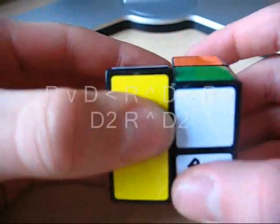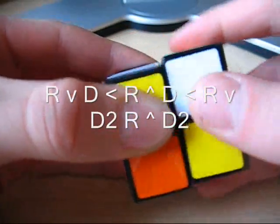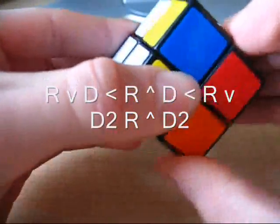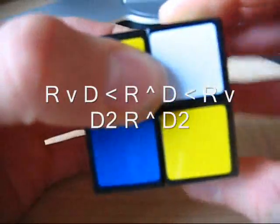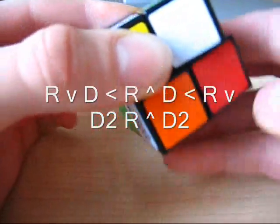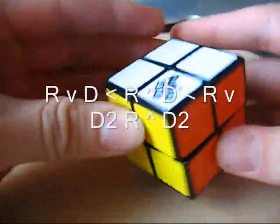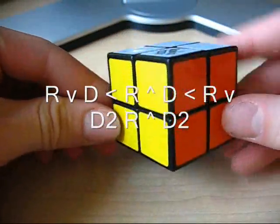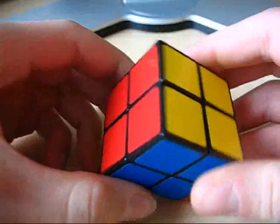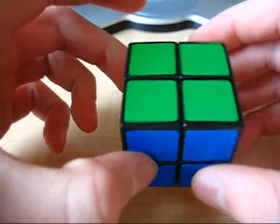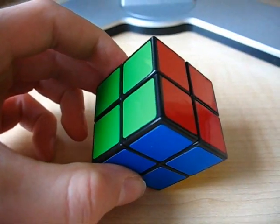So let's memorize this. Right down, bottom left, right up, bottom left, right down, bottom, bottom, right up, bottom, bottom. Now if you did it all, you should have solved it. And there's only one other case I'll just get to in a little bit.